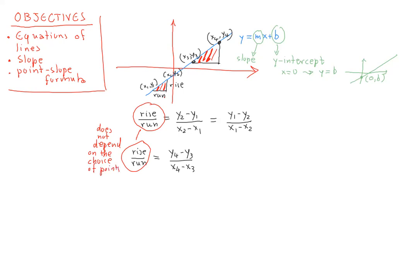It turns out that this rise over run is what we call the slope of the line. The slope is nothing else but the rise over run as computed for any two random points on the line.